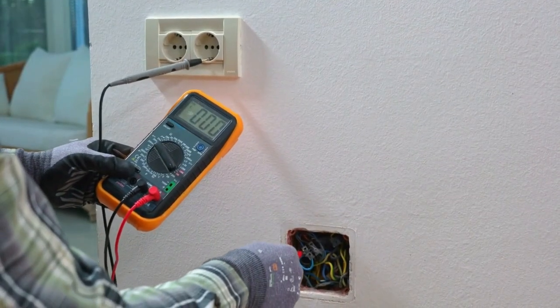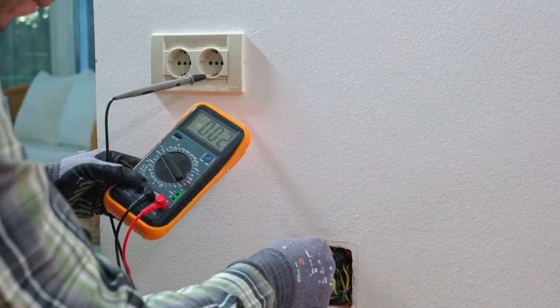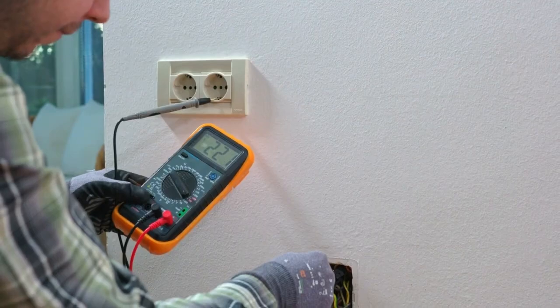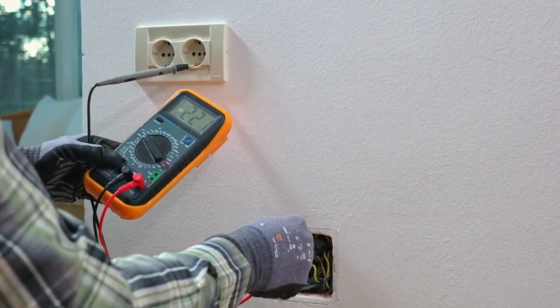Besides voltage, multimeters measure current, which indicates the flow of electric charge through a circuit. Knowing the current is essential to assess the power usage and identify potential faults in electrical devices.